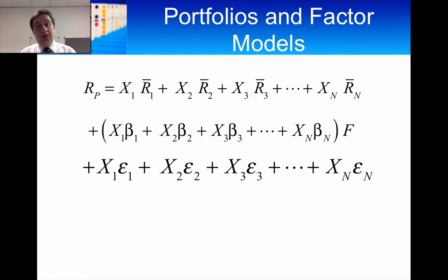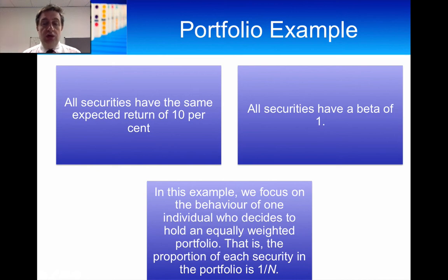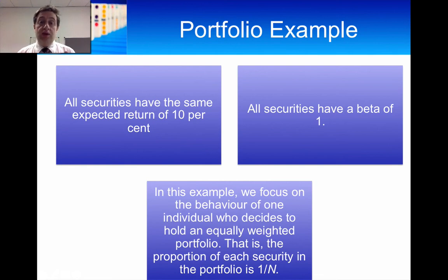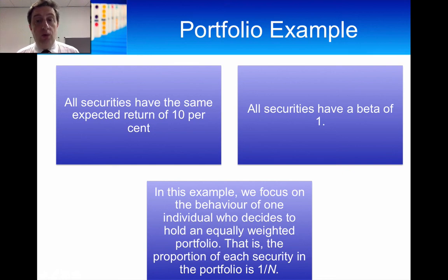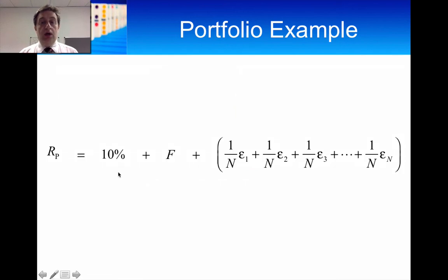Let me give a simplified example to illustrate how diversification affects portfolios. We'll say there are three components to a security's return: the expected return, the market-wide unanticipated return component, and the firm-specific component. We'll have an N-asset portfolio where every asset has an expected return of 10%, a beta with respect to the factor of 1, and it's equally weighted — so each weight is 1 over N.